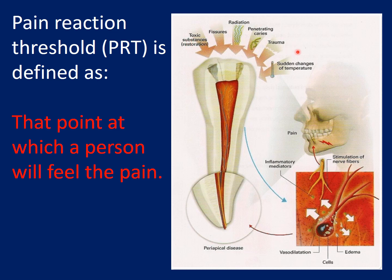There are many stimuli that may affect the tooth: toxic fissures, radiation, caries, trauma, and sudden changes of temperature. All these affect the nerve inside the pulp, and the stimulus will go to the nerve and will affect the pulp.